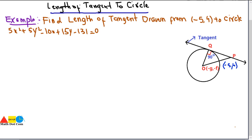First of all, we move towards the diagram that we have already drawn. There is nothing difficult in drawing this diagram — you just need to draw a circle. The center is (-g, -f). No need to get confused about this; the equation given is in the general form of the circle. For the general equation of the circle, the center is (-g, -f), which is why we already have that knowledge.